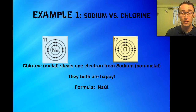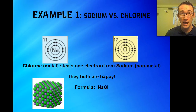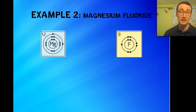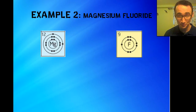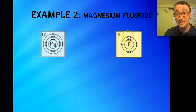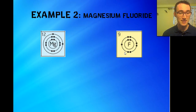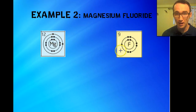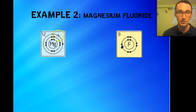Let's look at another example: magnesium fluoride. We have magnesium and the element fluorine come together. Magnesium has two electrons in its outer shell, and fluorine has seven. So this is going to be a little bit different. Fluorine will start by stealing an electron — remember it is the non-metal, so it's going to steal one electron. So one of them is happy now.